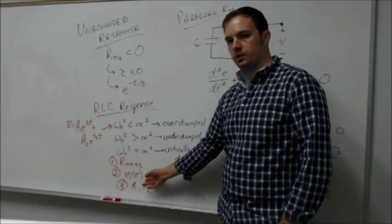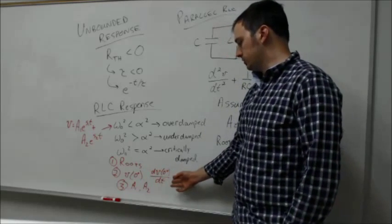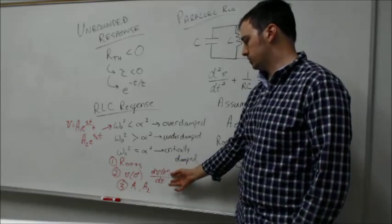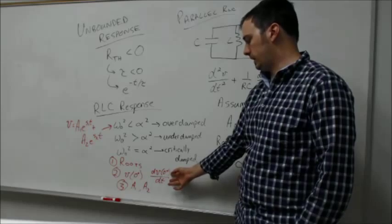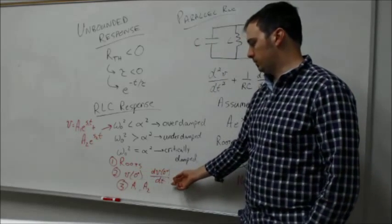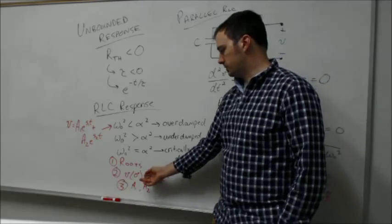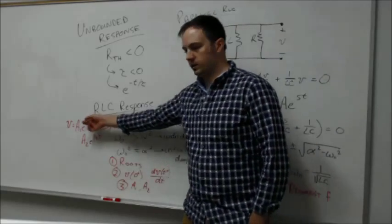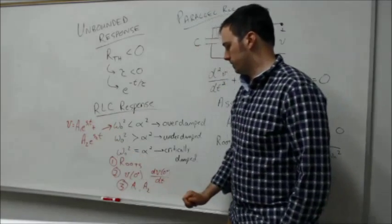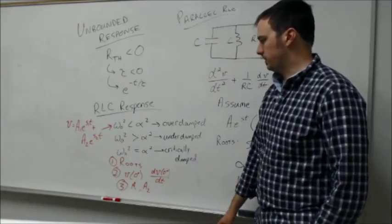You should be able to figure out what is the initial voltage condition and also what is the dv/dt, the initial change in the voltage per time at time t equals zero plus. Then we went through the process of how we implement each of these answers into figuring out what exactly is A1 and A2.